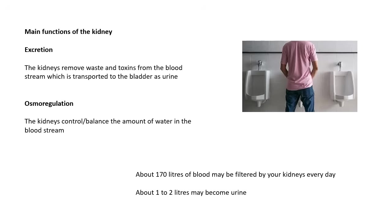The other important job of the kidney is osmoregulation. This means controlling the amount of water — or rather, the balance between water and dissolved substances, dissolved salts in the bloodstream. About 170 litres of blood may be filtered by your kidneys every day. That's a lot of blood. Only one or two litres may become urine.